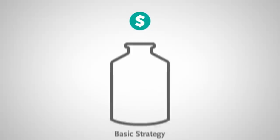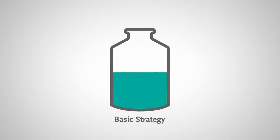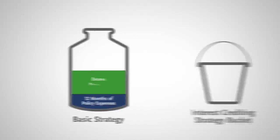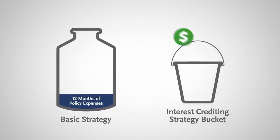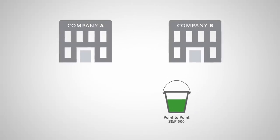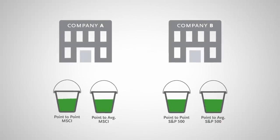So how does it work? Let's keep it simple. You pay a premium to the insurance company. Your premiums are put into an account called the basic strategy. A portion of those premiums are used to cover 12 months of policy expenses, so they'll stay in there. Premium dollars paid in excess of the 12 months of policy expenses go into the interest crediting strategies of your choice. Insurance companies can have different types of strategies and can use different indexes like the MSCI or S&P 500.